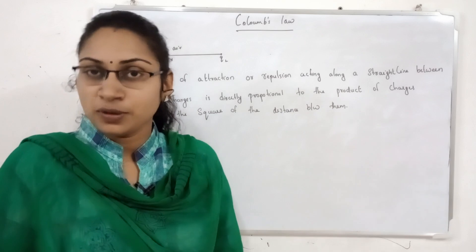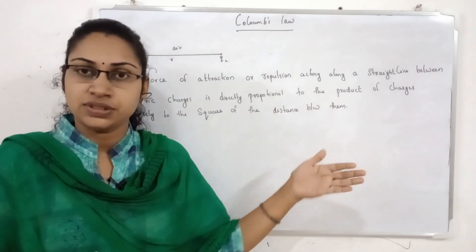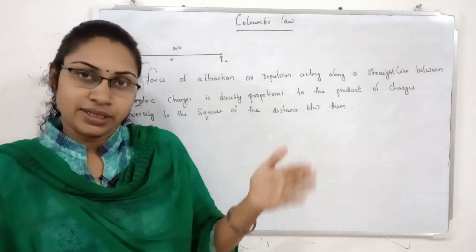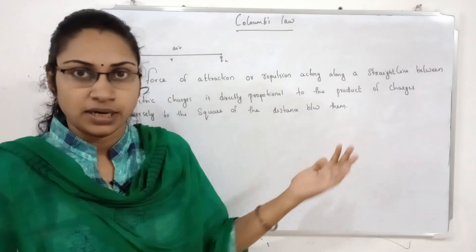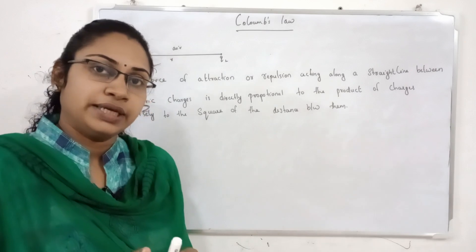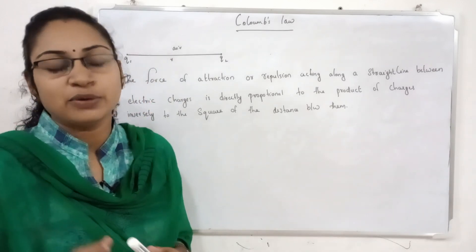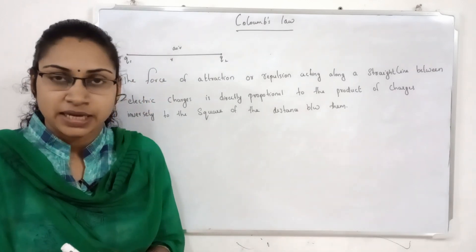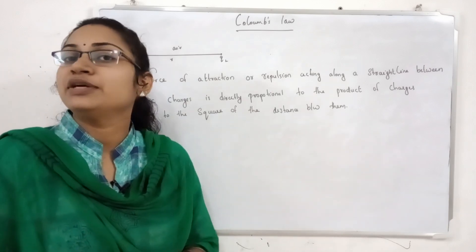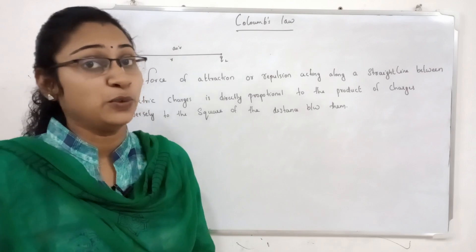We will look at Coulombs. We will learn more about quantization of charge. What is Coulombs? We learn a little bit about Coulombs. We have a common equation: 1 by 4 pi epsilon 0, Q1 Q2 divided by r square.